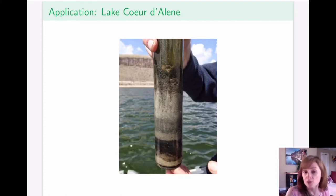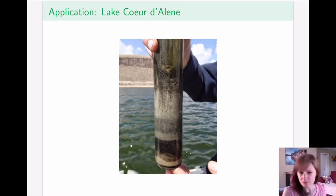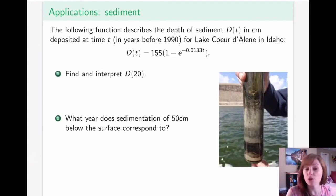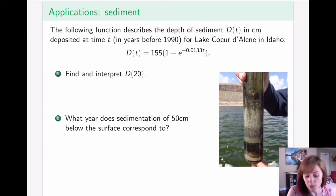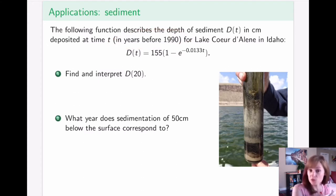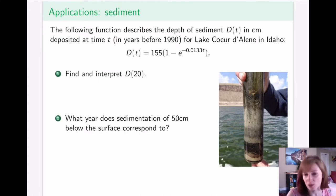Similarly, various radioactive sediments occurred through testing or disasters such as the Chernobyl disaster. All in all, researchers have been able to come up with a formula that describes the depth of the sediment. Notice that time t corresponds to years prior to 1990, so year 1990 is zero, and as t increases, the time actually moves backwards. It is important in word problems to pause before doing any math and understand what the function represents.